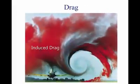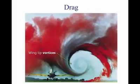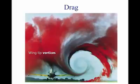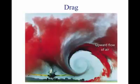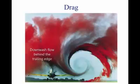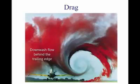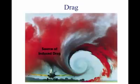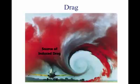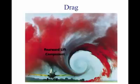Induced drag is the second basic type of drag. When an airfoil produces lift, there is always drag. This drag comes from wingtip vortices. When the aircraft is viewed from the tail, these vortices circulate counterclockwise about the right tip and clockwise about the left tip. They induce an upward flow of air beyond the tip and a downwash flow behind the wing's trailing edge. This induced downwash has nothing in common with the downwash that is necessary to produce lift — it is, in fact, the source of induced drag. This downwash over the top of the airfoil at the tip has the same effect as bending the lift vector rearward. Therefore, the lift is slightly aft of perpendicular to the relative wind, creating a rearward lift component. This is induced drag.